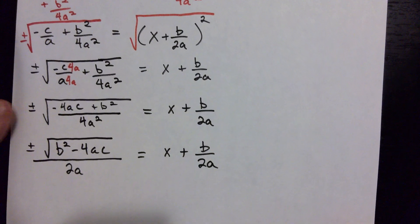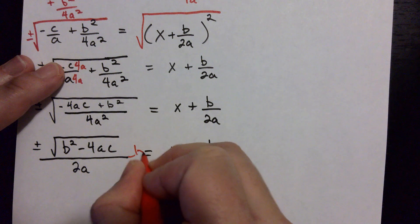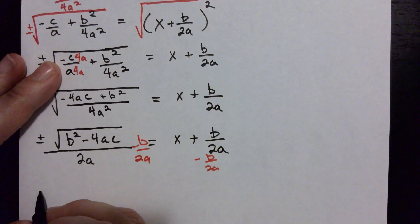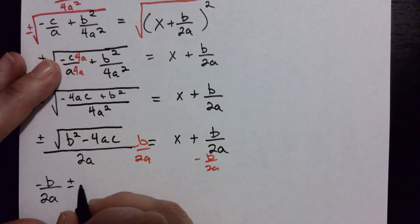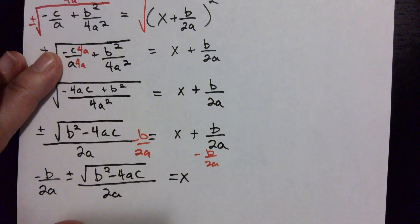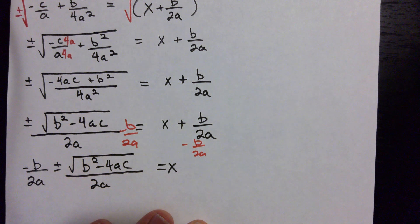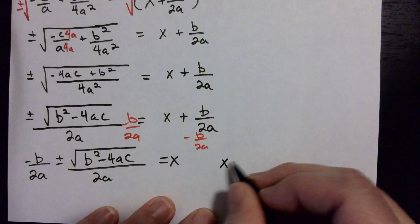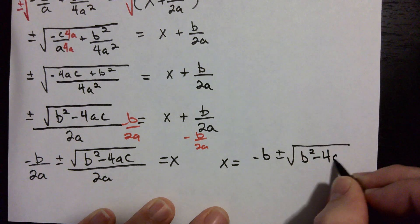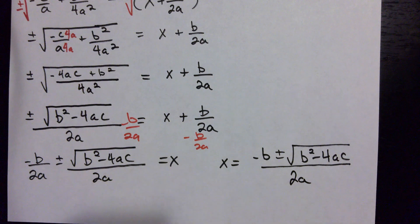We're almost done. Now we subtract b/(2a) from both sides — both fractions share the common denominator 2a. Putting it out front: negative b/(2a) plus or minus √(b² − 4ac) / 2a equals x. The last step is to combine these two fractions since they share the same denominator. So x = (−b ± √(b² − 4ac)) / 2a. And we have derived the quadratic formula.